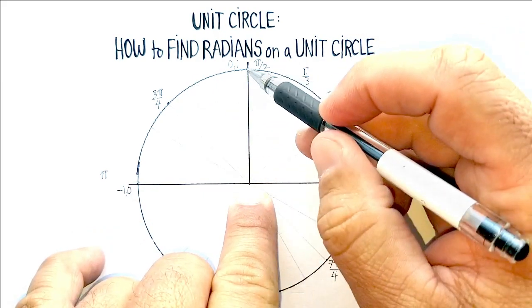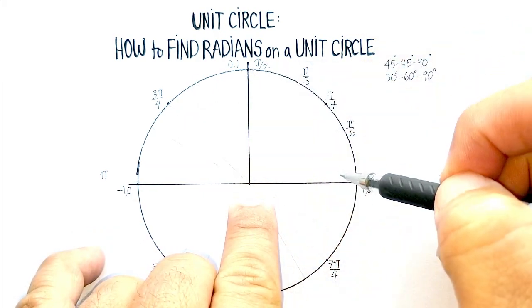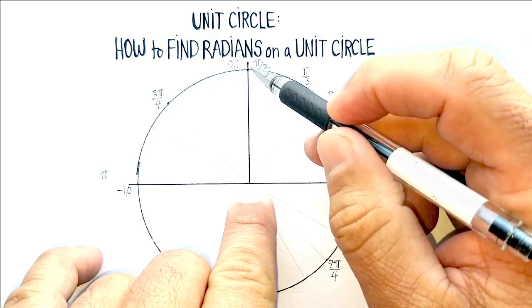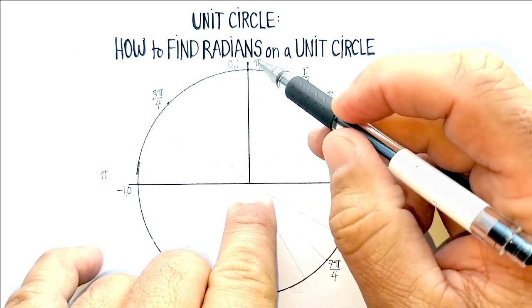Here will be, excuse me, right here. We say that's one-sixth, two-sixths. Three over six is one-half, so there's our half pi.